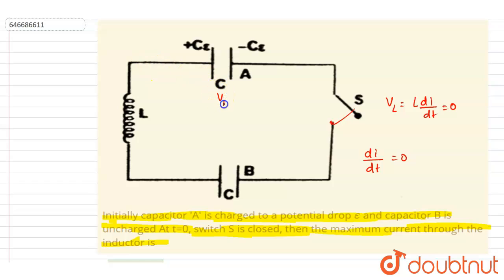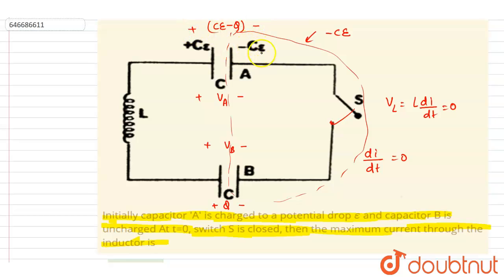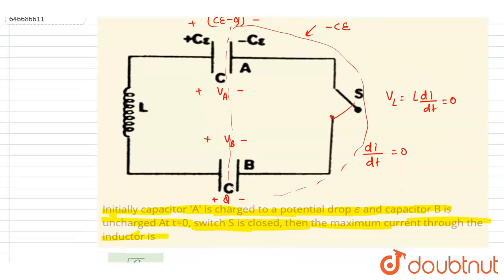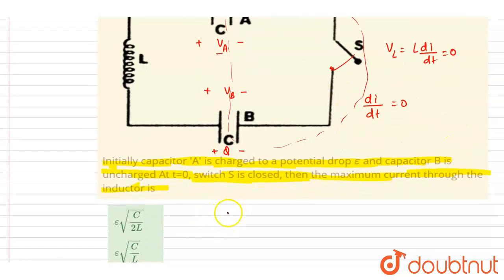At maximum current, the potential difference across capacitor A equals the potential difference across capacitor B. Using Kirchhoff's loop, we note that the two isolated plates have conserved charge of minus Ce. So if at any instant one plate has charge minus q, the other will have Ce minus q.